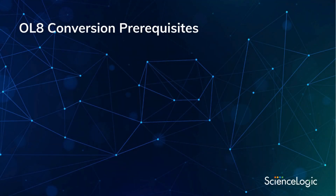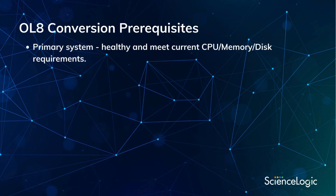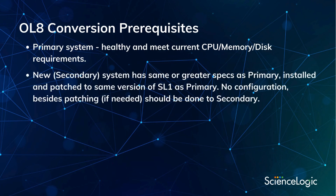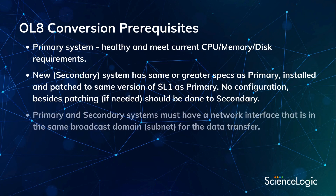Before we start the conversion process, let's review the prerequisites to complete the conversion. The primary system should be healthy and meet current requirements for CPU, memory, and disk. The new secondary system has the same or greater specifications as the primary, and is installed and patched to the same version of SL1 as the primary. No configuration besides patching, if needed, should be done to this new secondary system. Both primary and secondary systems must have a network interface that is in the same broadcast domain or subnet to use for the data transfer.